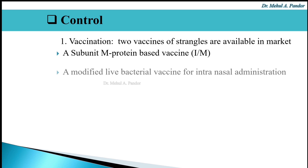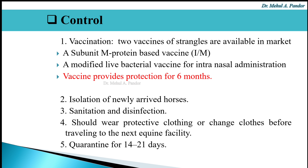The disease can be controlled through vaccination. Two vaccines are available: the first is a subunit M-protein-based vaccine, and the second is a modified live bacterial vaccine for intranasal administration. Vaccines provide protection for six months. The disease can also be controlled by isolation of newly arrived horses, sanitation and disinfection of areas where horses are kept, wearing protective clothing or changing clothes before traveling to the next equine facility, and a quarantine period of 14 to 21 days.